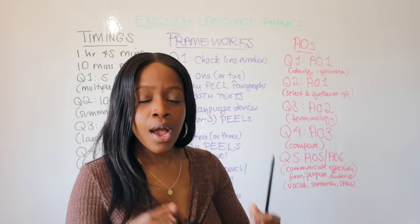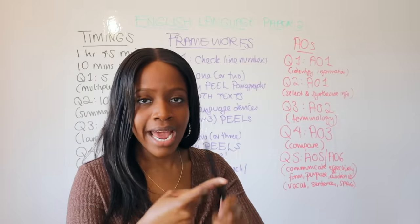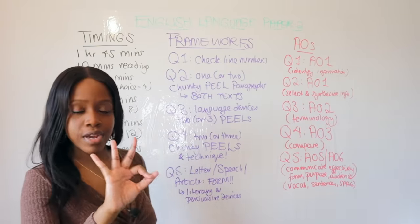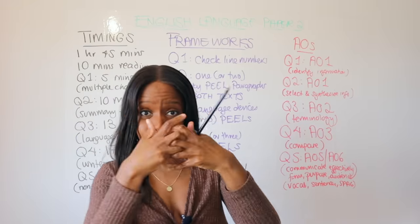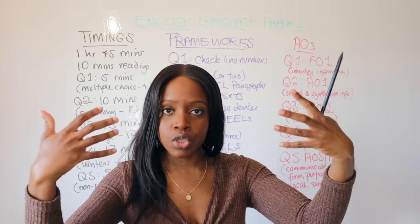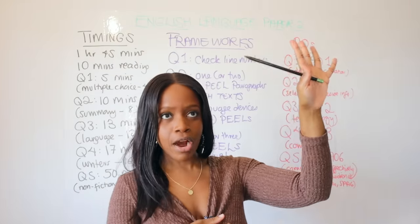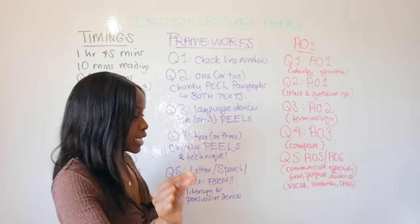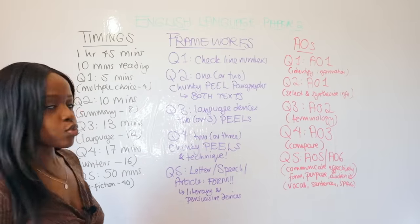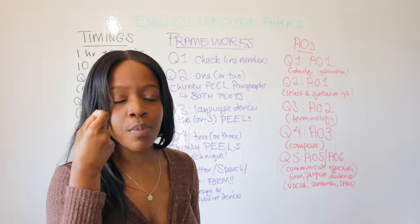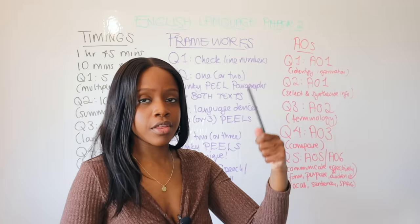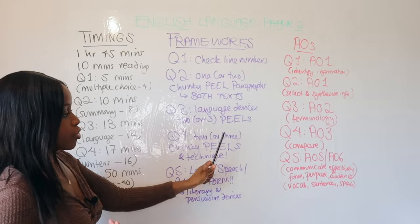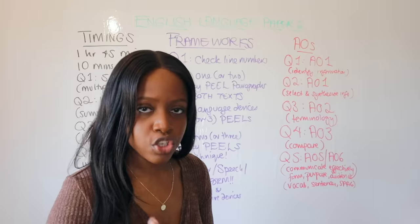Question Four is the final chunky comparative question. Not only must you compare both sources, you must also mention language and structure techniques for both writers. Aim for at least two to three chunky comparison PEEL paragraphs, integrating Source A and Source B in the same paragraph — not one paragraph per source. In your explanation, discuss what techniques each author uses to illustrate either similar or different viewpoints.